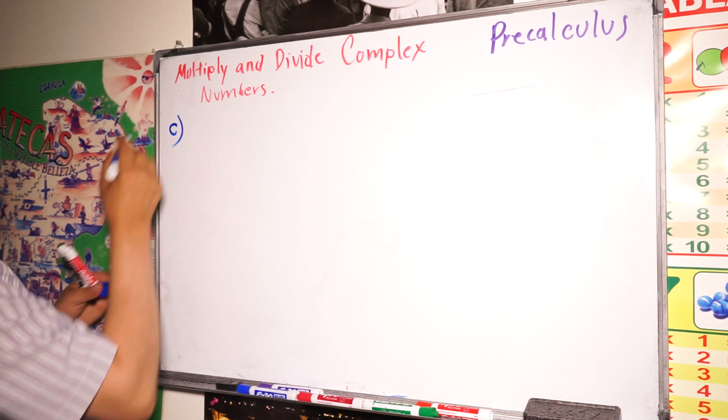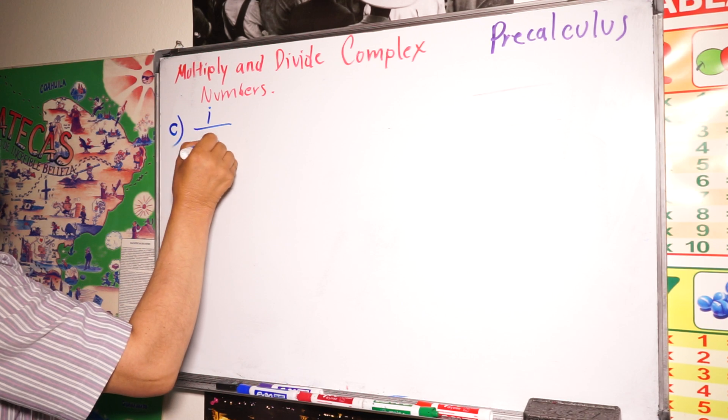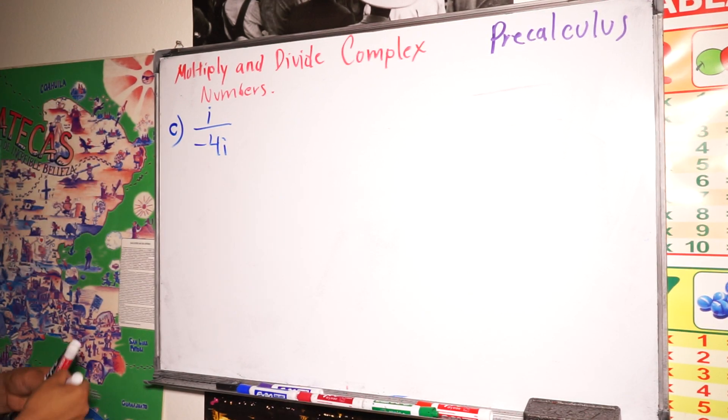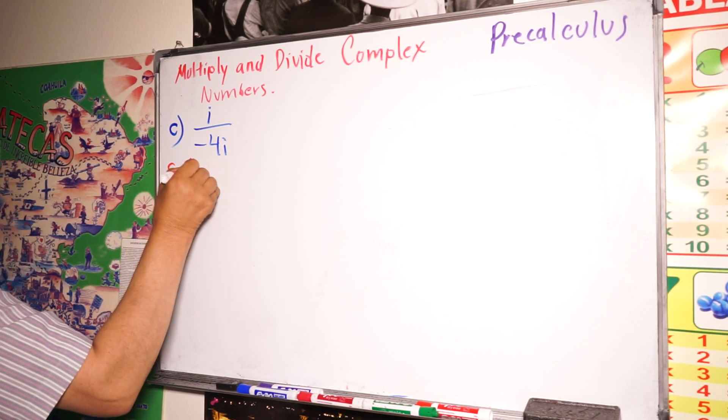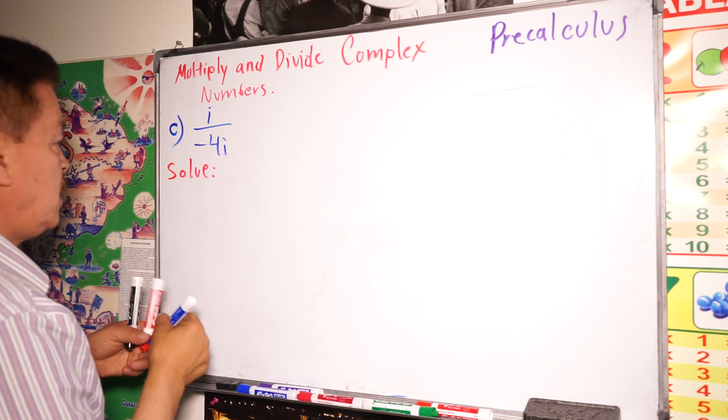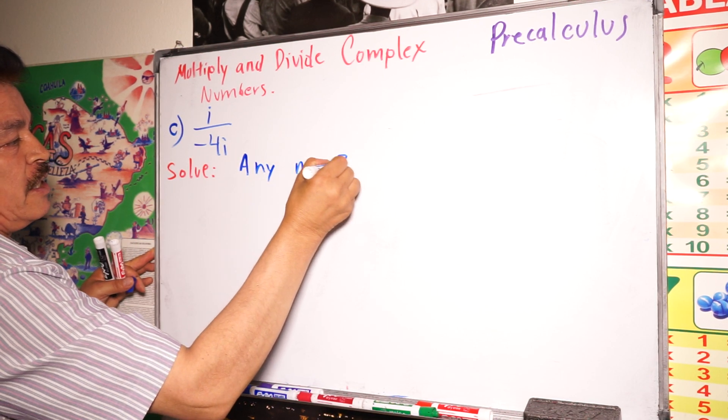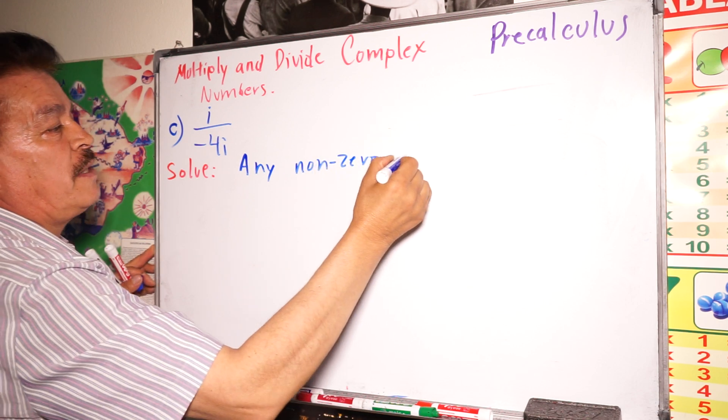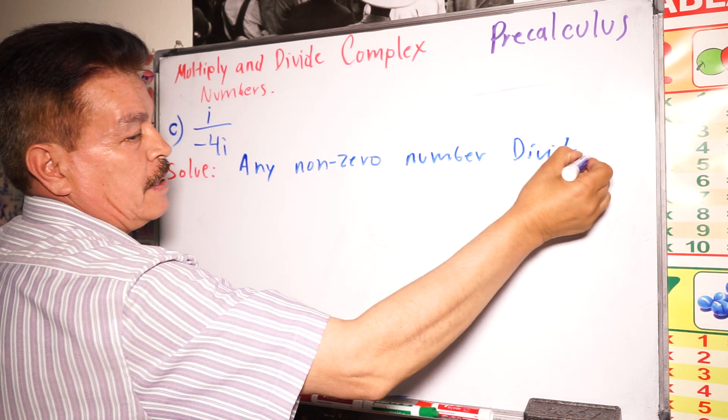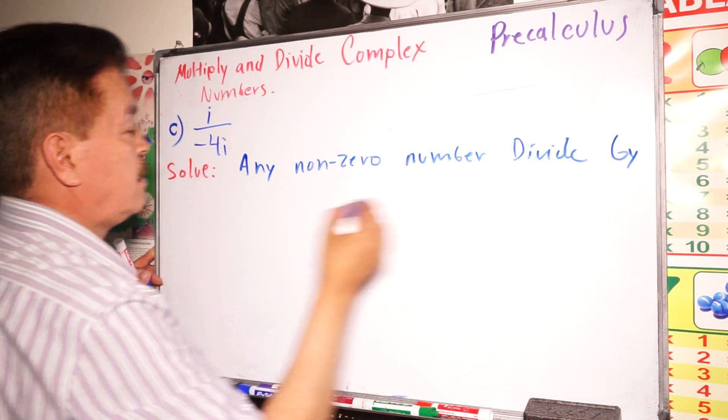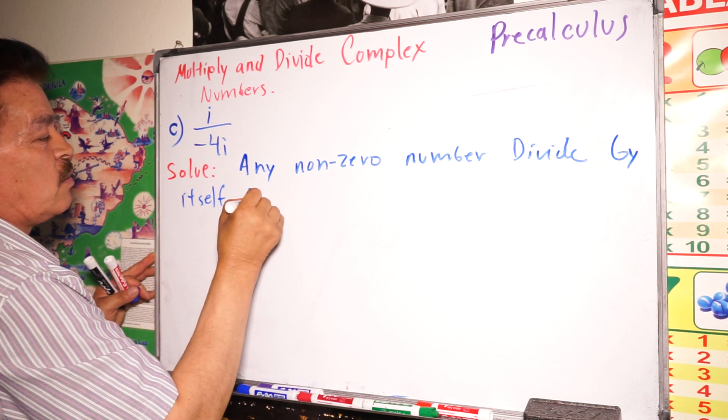Next problem is i divided by negative 4i. In this case, let's write something here. Any non-zero number divided by itself is 1.